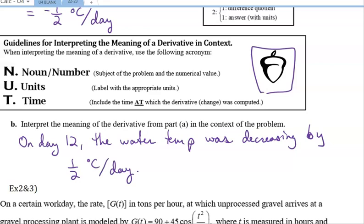a degree Celsius per day. So I've got my correct unit in here, the degree Celsius per day. My noun is that the water temp is decreasing by a half, and my time is day 12. Now, if I said decreasing by negative one-half degrees Celsius per day, that would be incorrect, because if you're decreasing by a negative amount, that is increasing. I could also say it's changing by negative one-half, and that would be fine.